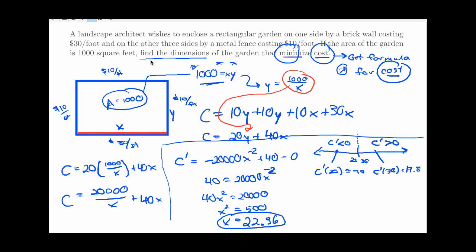And now to answer the question, find the dimensions, both of them, of the garden. I need to take my 22.36 feet and find out what the y was. So the y, it's 1,000 over that. So 1,000 over 22.36 will come out to be about 44.73. It's actually double the x value in this case. So we definitely know through calculus that the cost of this garden is minimized absolutely when the x value, the length of the brick wall side is 22.36 feet and the length of the adjacent side is 44.73 feet.